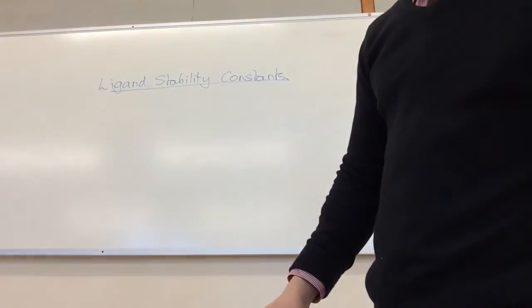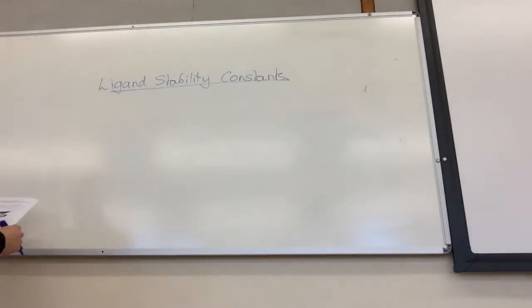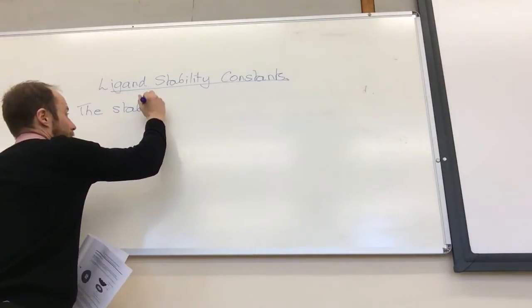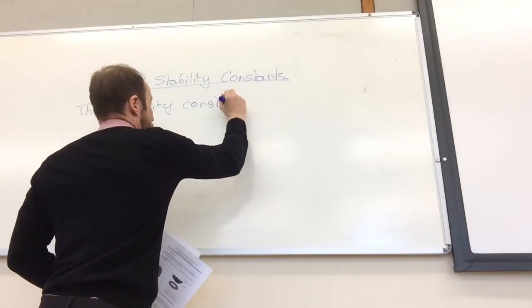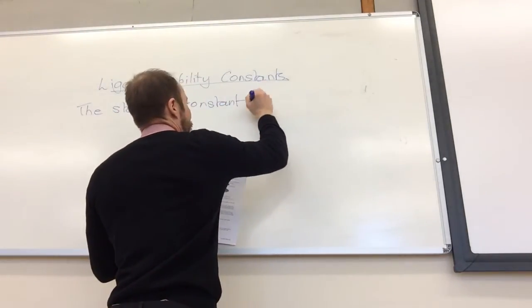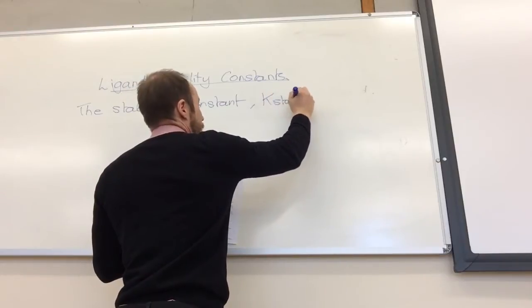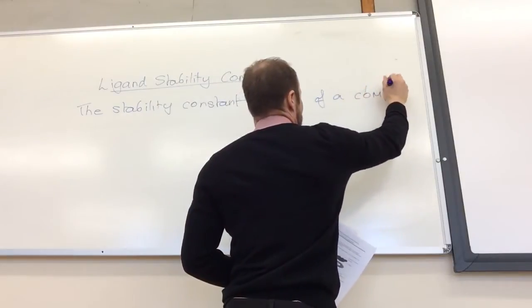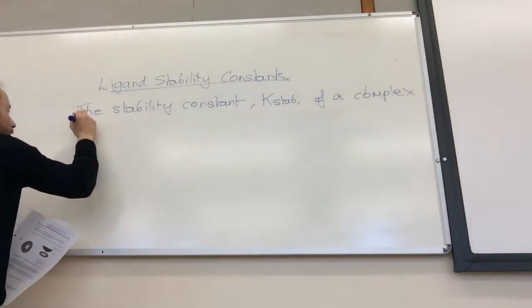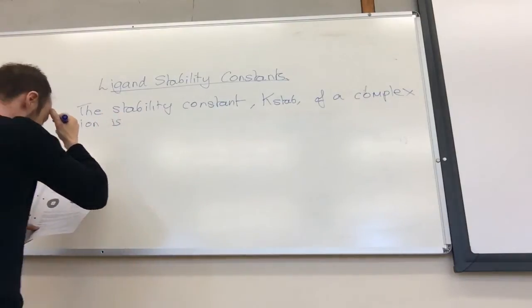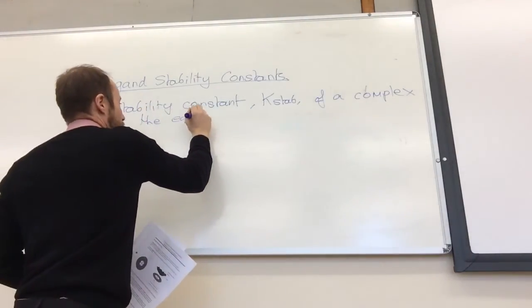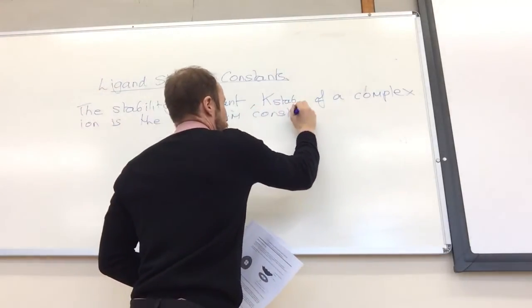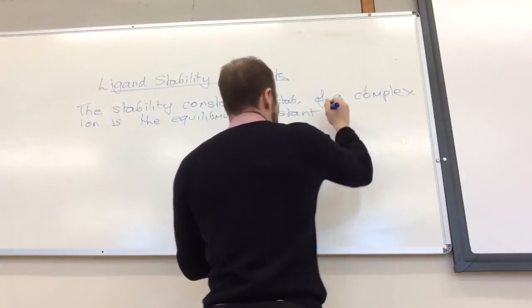what is a ligand stability constant? Well, the definition, which we all take together, so the stability constant, which we actually call Kstab, of a complex ion, is the equilibrium constant for the formation of the complex ion in a solvent from its constituent ions.